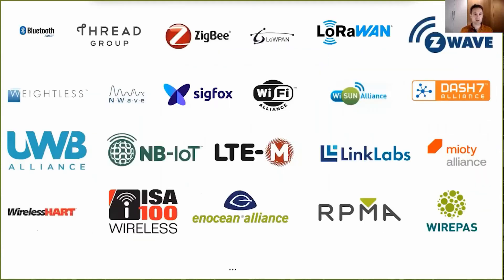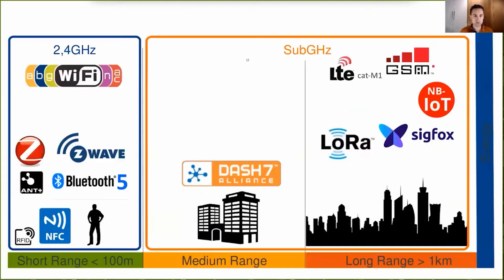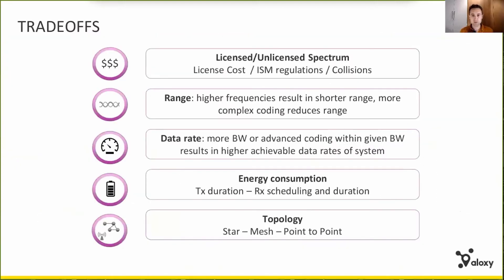There are a lot of wireless communication technologies I encounter more regularly, and there are different ways to compare them. Quite often the aspect of range is used for this, so you can categorize the protocols more or less by range. However, it's a more complex trade-off of which range is only a part. Other aspects include data rates, scalability, reliability, energy consumption and topology.